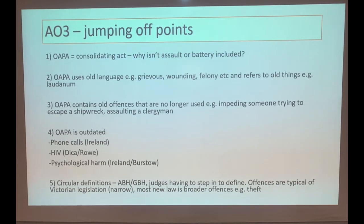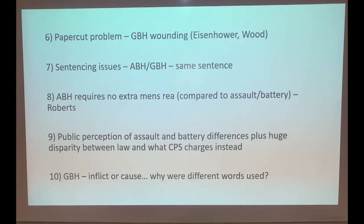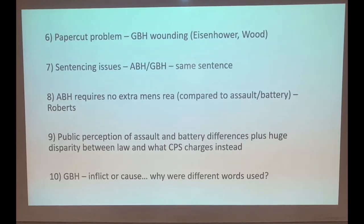The offences in the OPA are typical of Victorian legislation - very narrow, covering very specific factual scenarios - whereas modern legislation tends to use broader offences, as with the Theft Act. Sixth, what can be called the 'paper cut problem': technically, if you give someone a paper cut that breaks the skin and causes bleeding, that is a wound under the law, making it GBH. In reality, no one would be charged with GBH in that instance. There is a huge disparity between what the law says and what the CPS and police actually charge, raising the question of why the law isn't changed to reflect current practice.